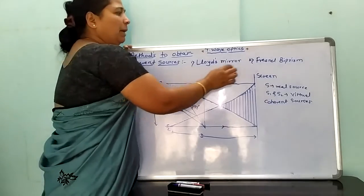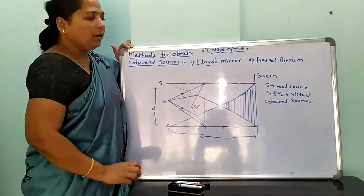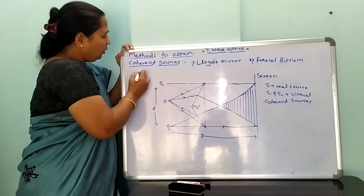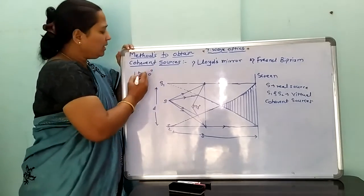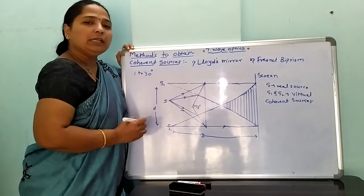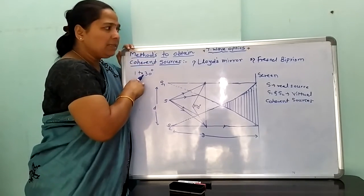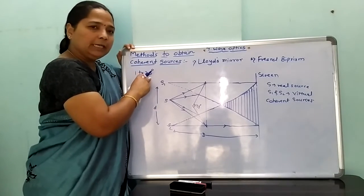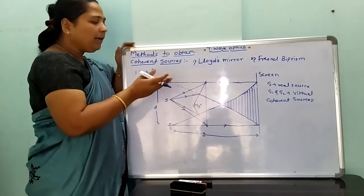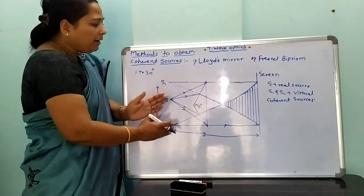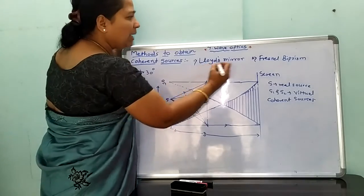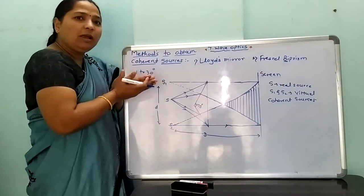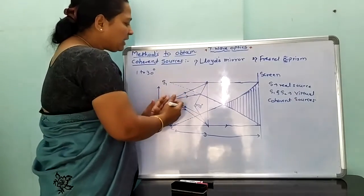How is a biprism formed? The refracting angle of the two prisms is between 1 to 30 degrees. Taking those two prisms whose refracting angle is between 1 to 30 degrees, they are connected at their bases to form a biprism. Biprism means two prisms are connected with each other, and their refracting edge is in front of the slit.